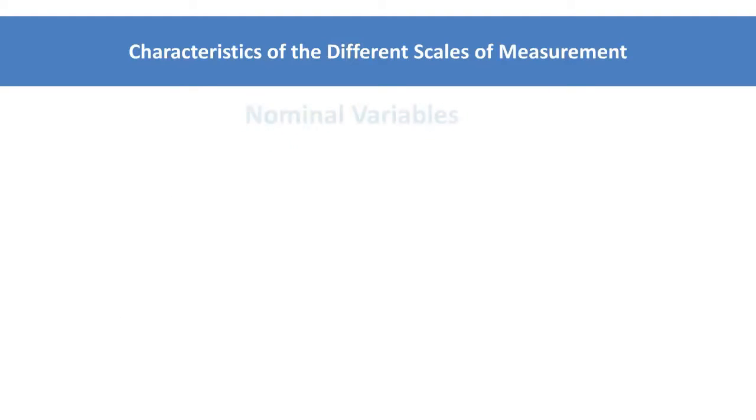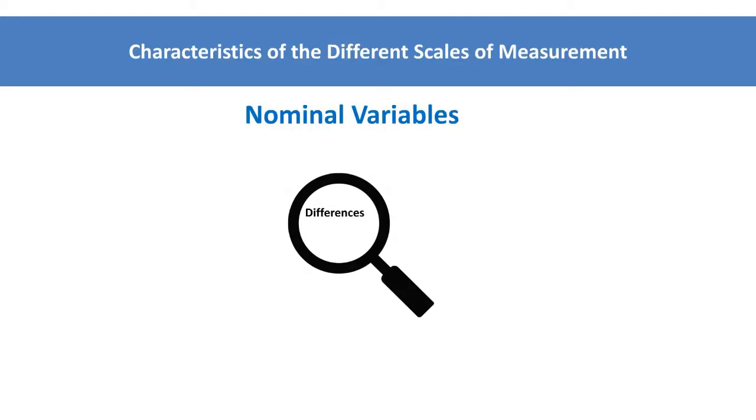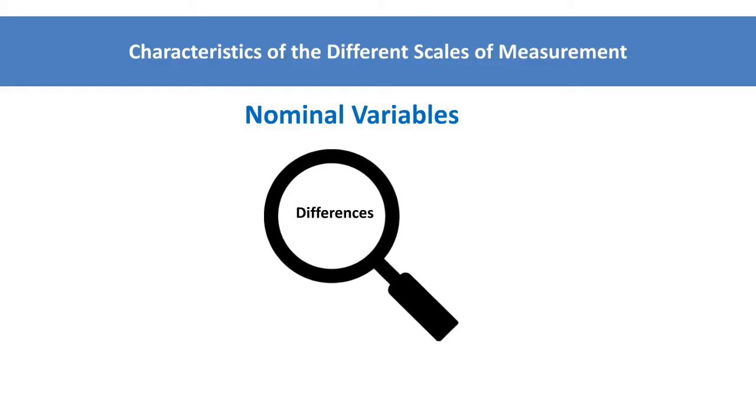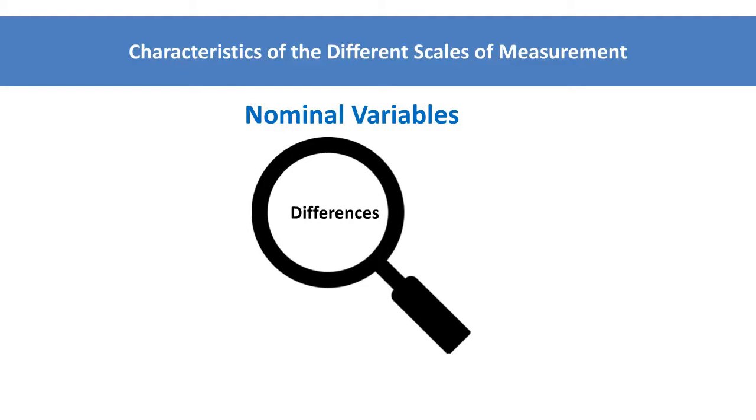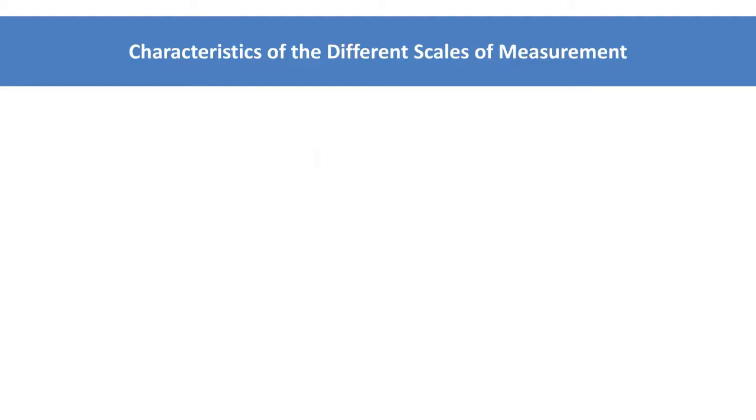The first level of measurement is nominal. It is the least precise measure of data as it only indicates differences. Nominal level data uses discrete categories to describe qualitative differences. An example of a nominal variable is types of pets.